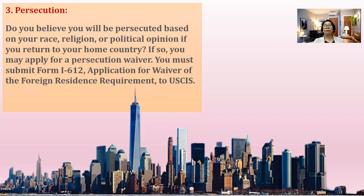The third basis for securing a waiver is persecution. If you believe that you will be persecuted based on your race, religion, or political opinion in your home country if you return, then you can apply for a persecution waiver. You have to establish the fact that if you go home for two years, you will be persecuted. You must submit Form I-612, Application for Waiver of Foreign Residence Requirements, to the USCIS. This reason for applying for a waiver entails several documentation — you really need to establish that.